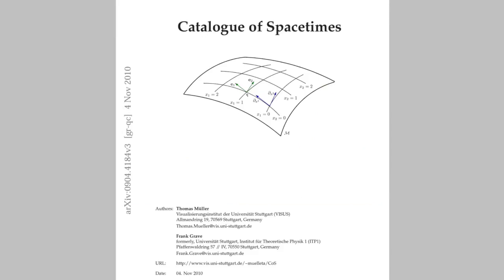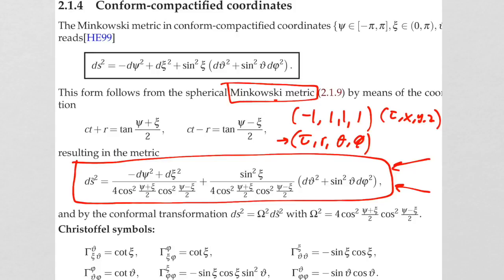All of those coordinate transformations that got us from the regular Minkowski metric to this monster are embodied in the catalog in this convenient expression where you start with T and R. T plus R equals the tangent of the sum of the two new coordinates over 2, and T minus R is the tangent of the difference of the two coordinates over 2 — psi and psi. In Lesson 6 I walked through the entire process step by step without having to use these implicit expressions. We ended up with a flat metric expressed in the new coordinates psi and psi.